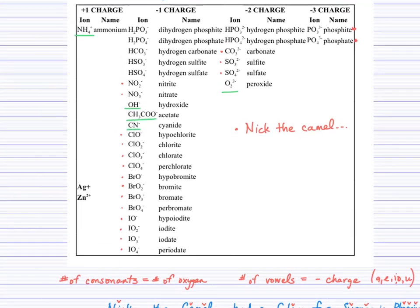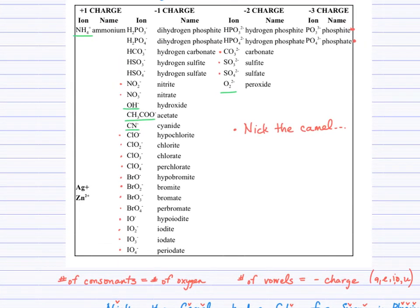Moving back up to this list, we basically just covered everything in red from Nick the Camel. Here's nitrate and nitrite, then we have all of the ones with halogens, carbonate, the sulfite and sulfate, as well as the phosphite and phosphate. So there you go. Nick the Camel just helped us out with a whole bunch there.